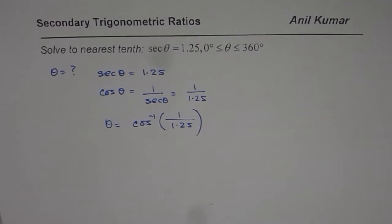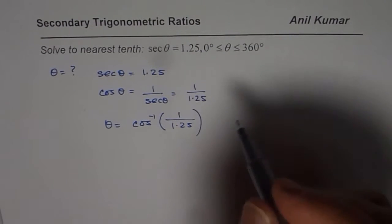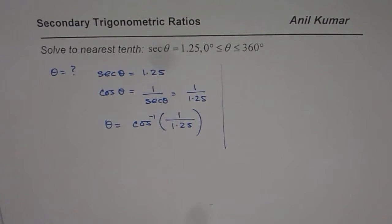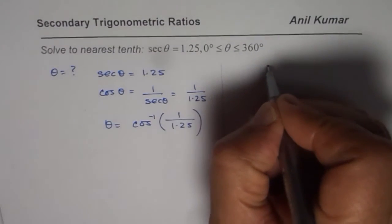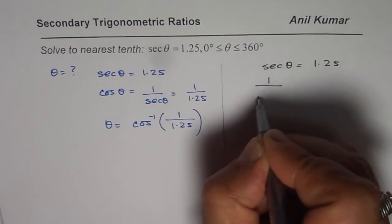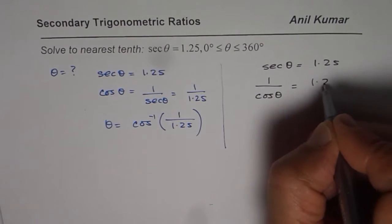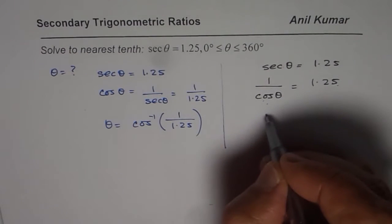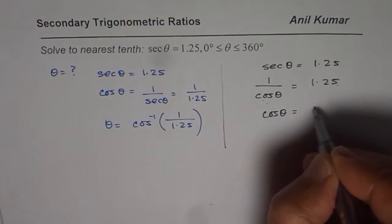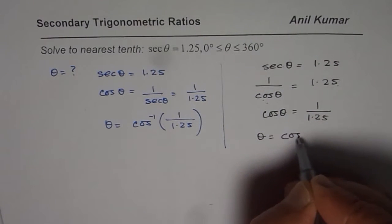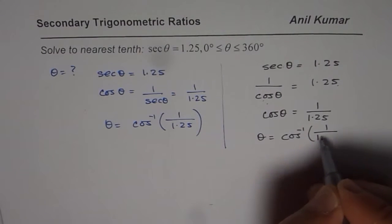I could have solved it in a different way also, which gives the same answer. We have secant theta is 1.25 and we know secant is 1 over cos theta. I know students will approach in very different ways, so these are two options. We have 1 over cos theta equals 1.25. Cross multiply, so we have cos theta equals 1 over 1.25. Same answer. So theta equals cos inverse of 1 over 1.25.